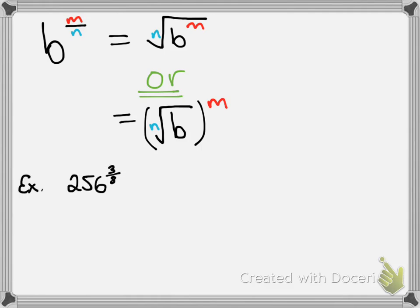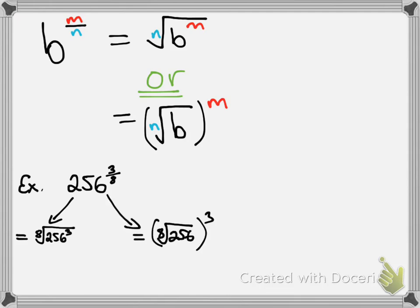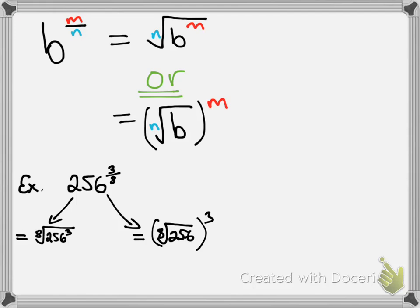So if I have 256 to the power of 3 eighths, according to the first way we would get the 8th root of 256 to the power of 3, and the second way would be the 8th root of 256, all to the power of 3 on the outside. The second one is easier to deal with because we can take the 8th root of 256 directly, whereas the first way requires taking the 8th root of 256 cubed, which is a very large number. So using the second form: the 8th root of 256 is 2, and 2 to the power of 3 is 8.